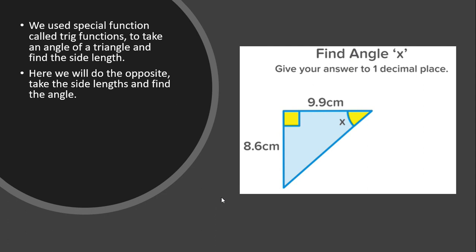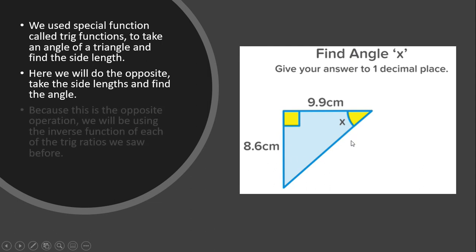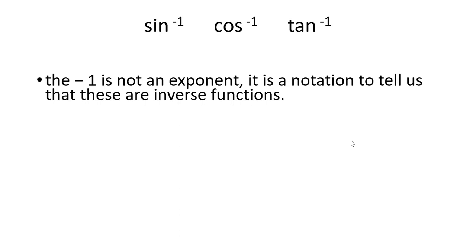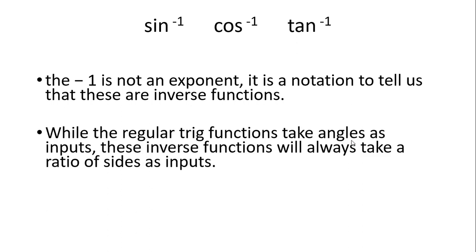Now we're doing the opposite — we're taking the side lengths which are given and trying to find the angle, which is not given. Notice that 8.6 and 9.9 are both sides of this right triangle, and the angle is missing. Because this is the opposite operation, we'll be using the inverse functions of each trig ratio: sine inverse, cosine inverse, tangent inverse. The negative one is not an exponent; it is a notation to tell us these are the inverse functions.